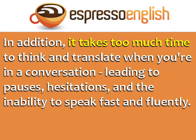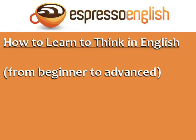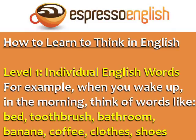So, here is how you can learn to think in English, from the beginner level to advanced. Level 1 is thinking in individual English words. For example, when you wake up in the morning, think of words like bed, toothbrush, bathroom, eat, banana, coffee, clothes, and shoes.